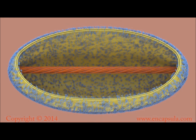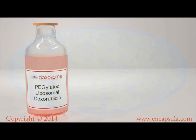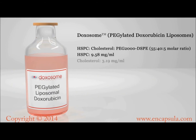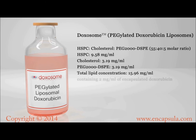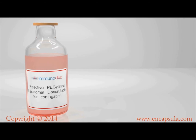This band stretches the membrane to form what is known as a coffee bean structure. Pegylated doxorubicin is composed of a 55 to 40 to 5 molar ratio of HSPC, cholesterol, and PEG-2000 DSPE. The concentration of encapsulated doxorubicin inside the liposomes is 2 milligrams per milliliter.